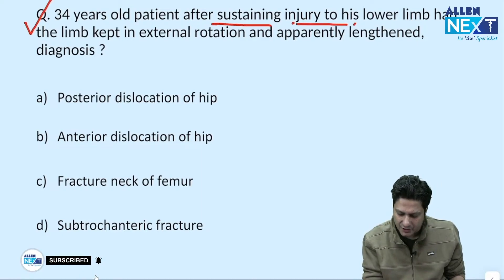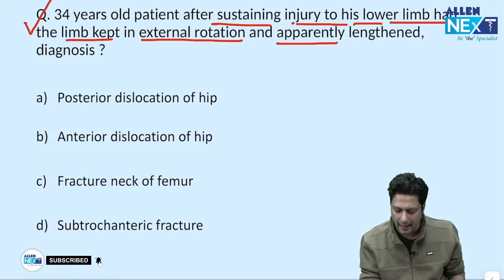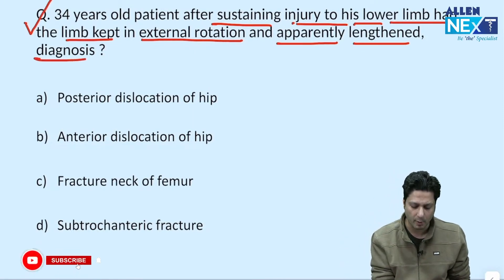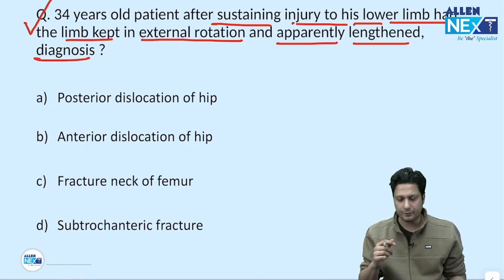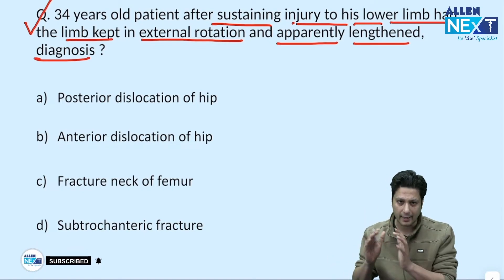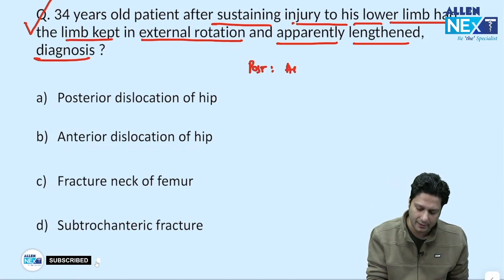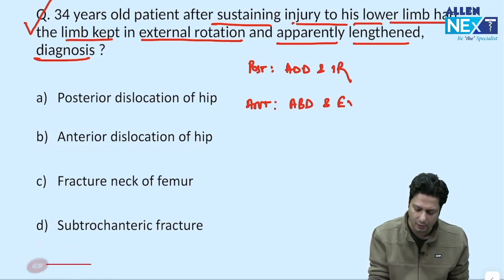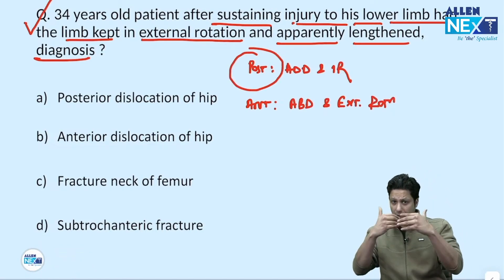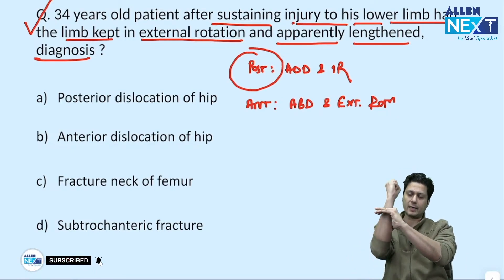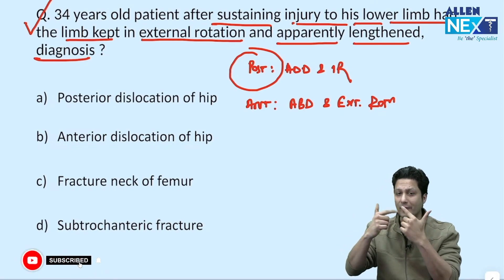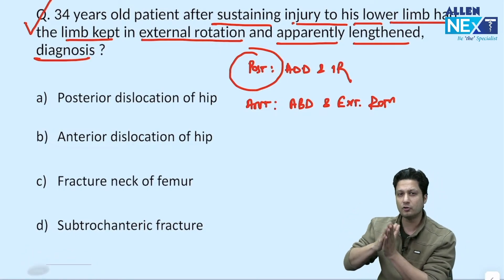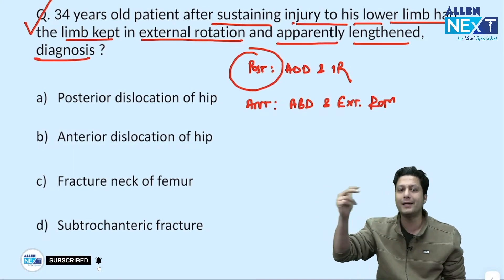The right lower limb is lengthened and kept in external rotation — what is the most probable diagnosis? In posterior dislocation of the hip joint, there is adduction and internal rotation, while in anterior dislocation there is abduction and external rotation. In posterior dislocation, the femoral head migrates proximally causing true shortening. In anterior dislocation, proximal migration is prevented by the rectus femoris muscle anteriorly, so there is no shortening — pointing towards anterior dislocation of the hip joint.